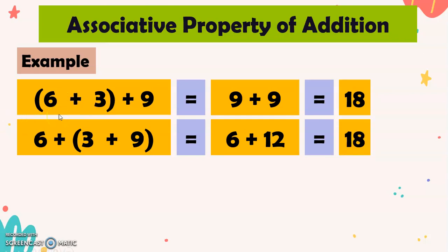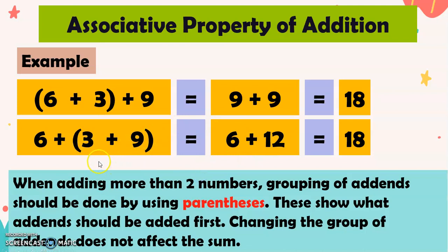Now, always remember, my dear grade 1, that when we have the associative property of addition, the numbers that are inside the open and closed parenthesis should be added first. So we should add 6 plus 3 first, that's why we have 9. And here, we added 3 plus 9 first, that's why we have 12. So when adding more than 2 numbers, grouping of addends should be done by using parenthesis. This shows what addends should be added first. Changing the group of addends does not affect the sum.